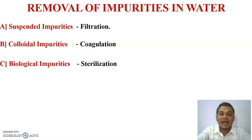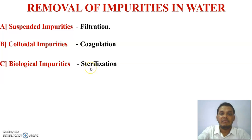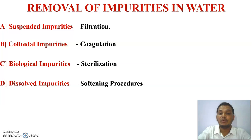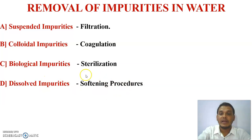Biological impurities can be removed with the help of the sterilization process. In the sterilization process, liquid chlorine and ozone are used as sterilizing agents, allowing algae, fungi, and bacteria to be easily removed. Dissolved impurities — whether dissolved salts or gases — can be removed using a water softening procedure or mechanical deaeration process.